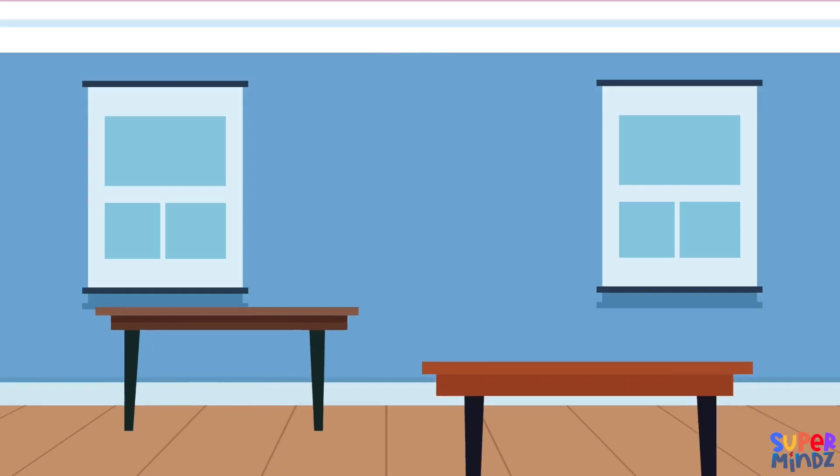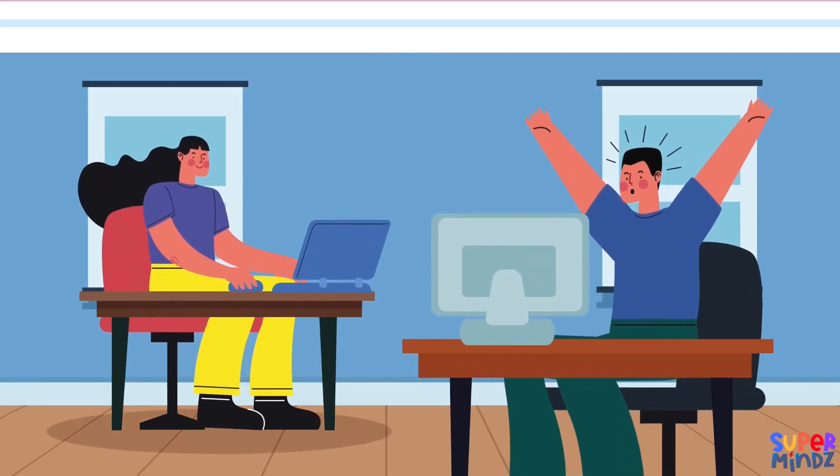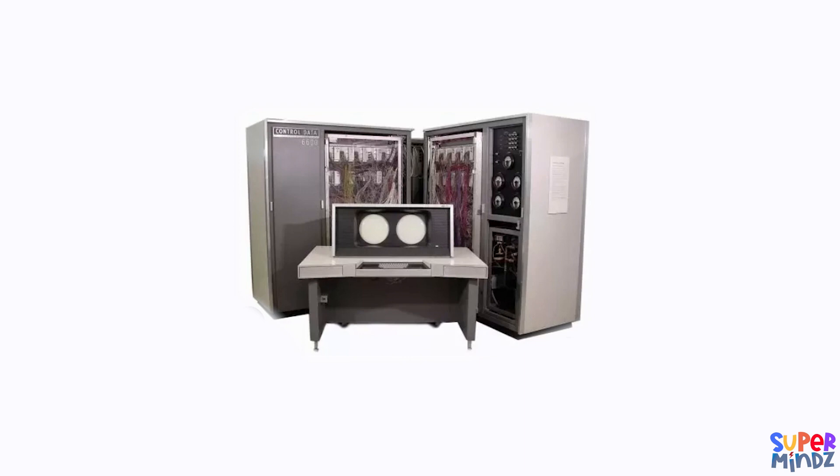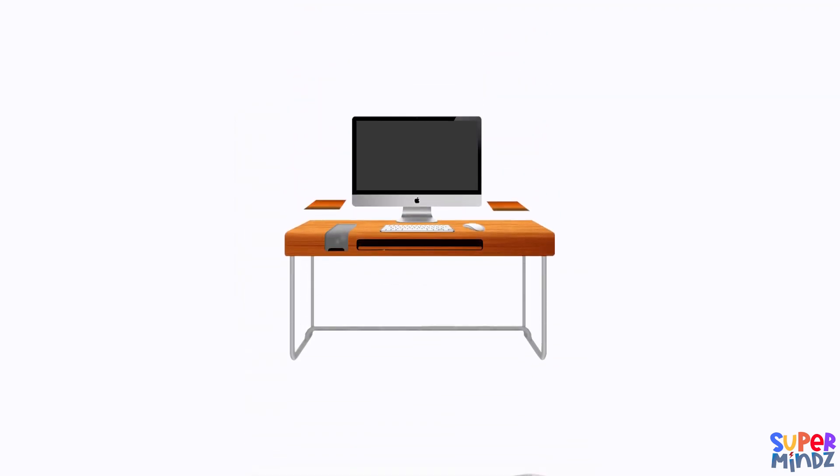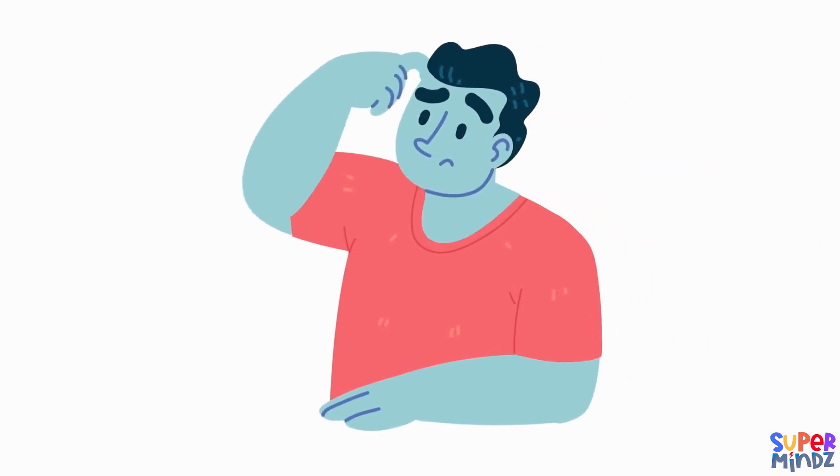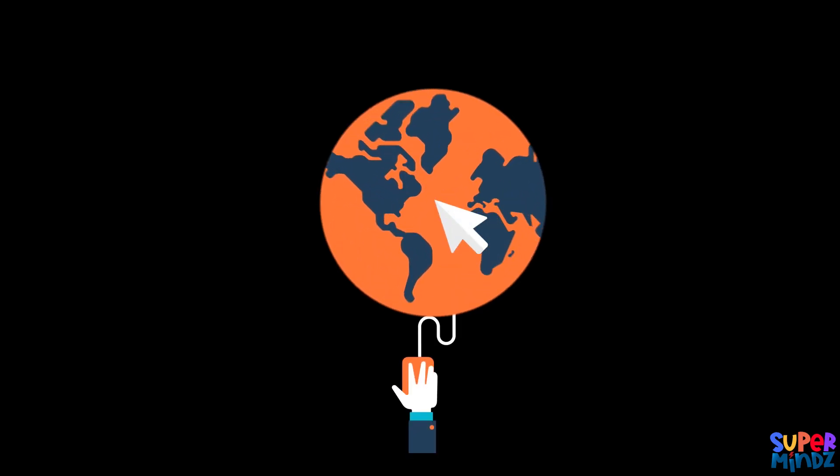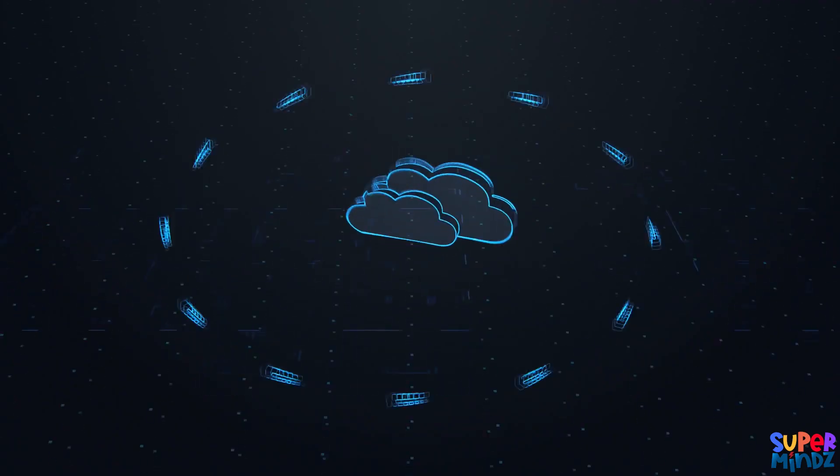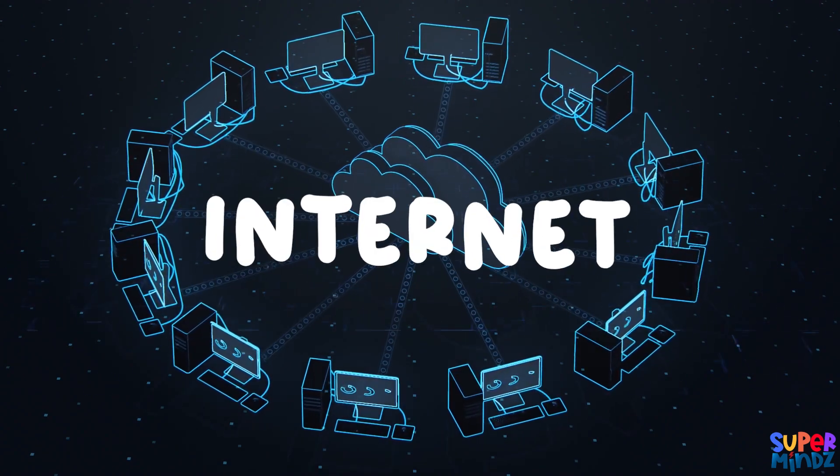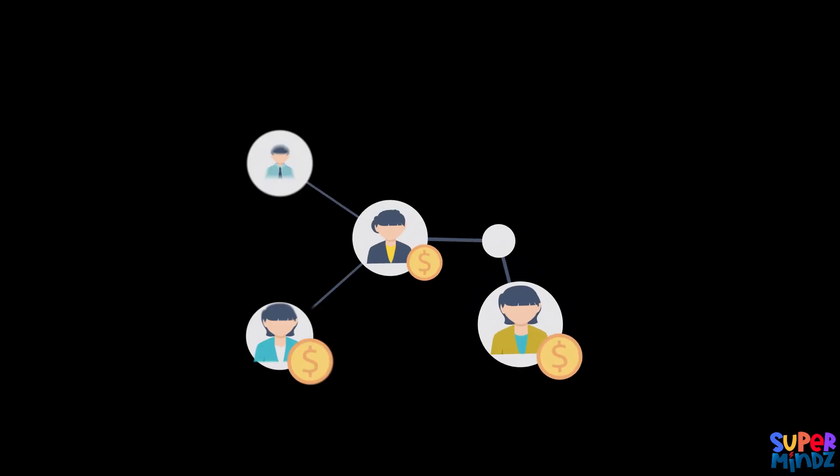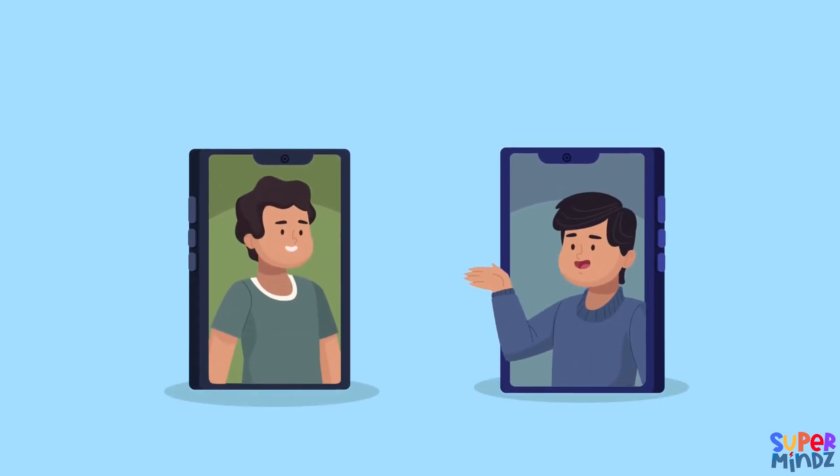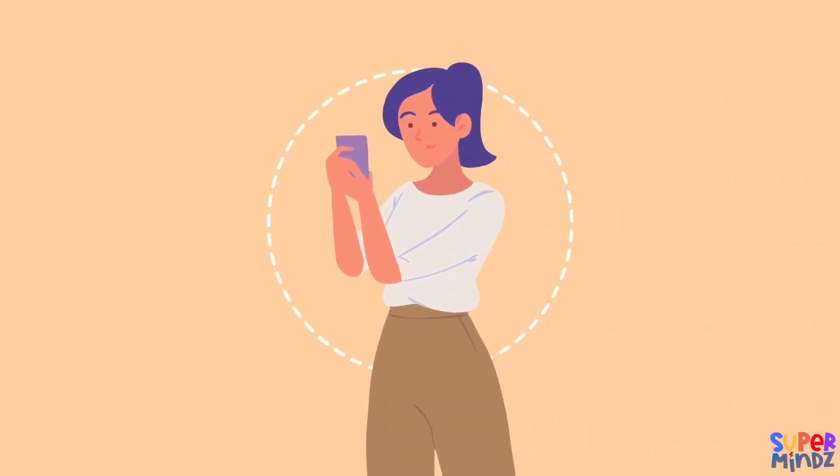Then came the personal computer, which you might find in homes and schools. Unlike the giant early computers, these are small enough to fit on a desk. And guess what? Computers even got better when we connected them all together using something called the internet. It lets us share information and talk to people all over the world.